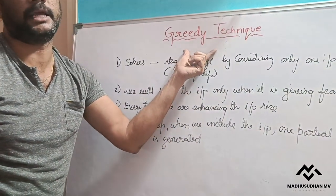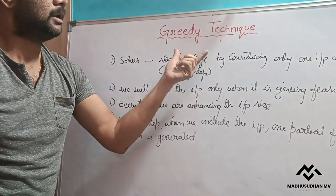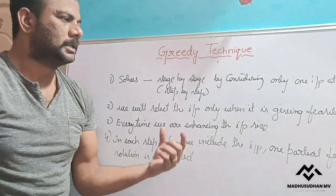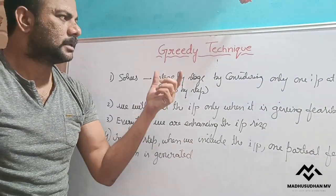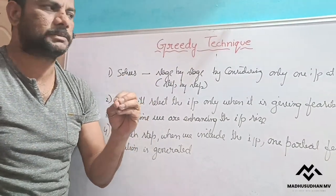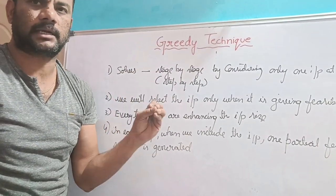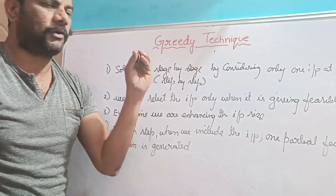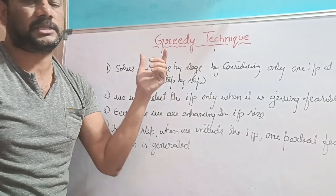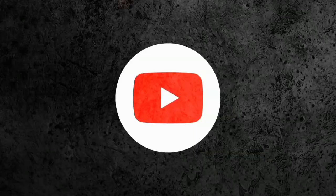This is the general plan — the general method of how a problem can be solved by applying the greedy technique. If you have any comments or questions, please write them in the comments. Thanks for watching.